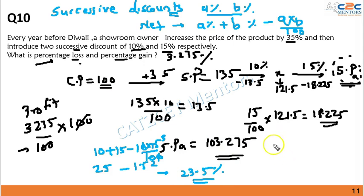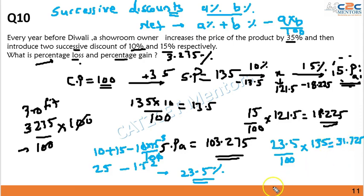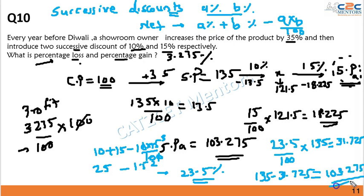Calculating 23.5% of 135: this turns out to be 31.725. Subtracting from 135 gives the actual selling price of 103.275, which matches the value obtained earlier. The net effect for successive discounts is calculated using this formula.